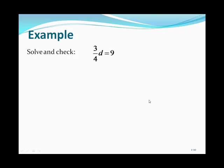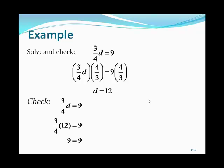When dealing with fractions, treat it as multiplication: 3 fourths times d equals 9. Since it's multiplication, we divide by 3 fourths — which is the same as multiplying by the reciprocal 4 thirds. Multiplying both sides by 4 thirds, the 3 fourths and 4 thirds cancel on the left to give d. On the right, 9 times 4 thirds: canceling 9 and 3 gives 3 times 4, which is 12. Checking d equals 12 gives a true statement, confirming the correct answer.